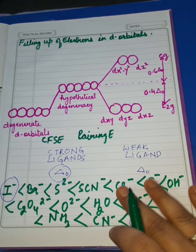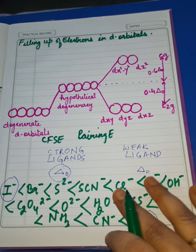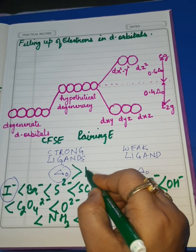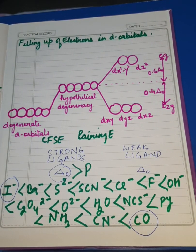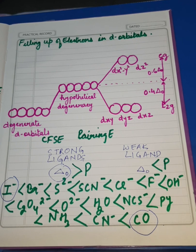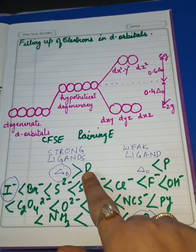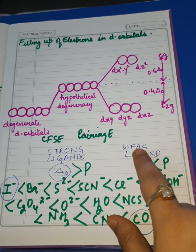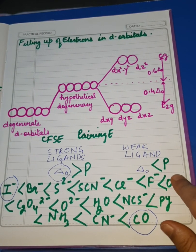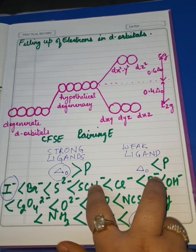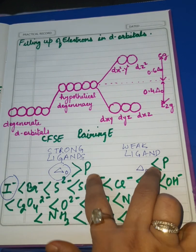In case of strong ligands, CFSE (delta naught) is greater than pairing energy. When we have weak ligands, delta naught is lesser than pairing energy. So remember: for strong ligands, pairing energy is less, meaning electrons get easily paired up. For weak ligands, pairing energy is more, meaning pairing of electrons takes place with difficulty. This is the key trick for filling up electrons.